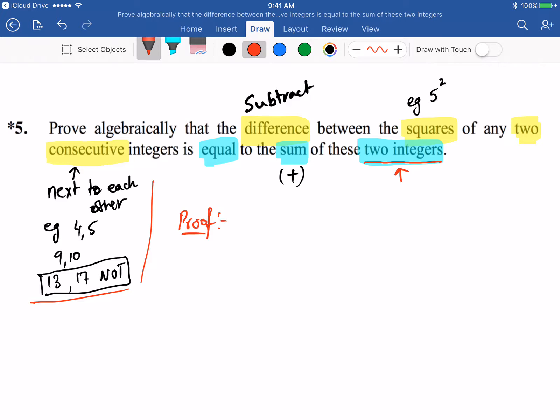Proof starts by selecting two integers. You can use any letter for that. I'm going to use n as my first integer and n plus one as the next integer. So let my two integers be n and n plus one.